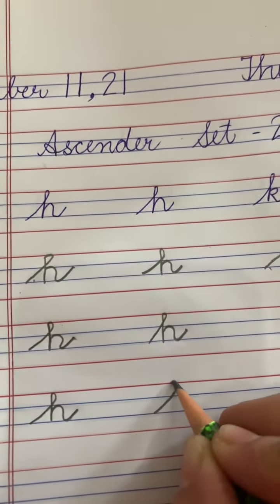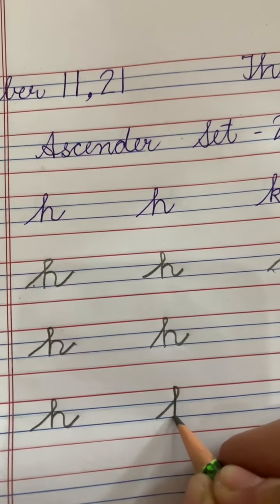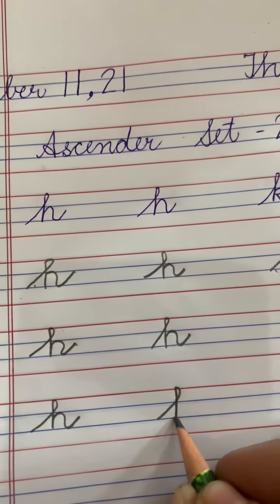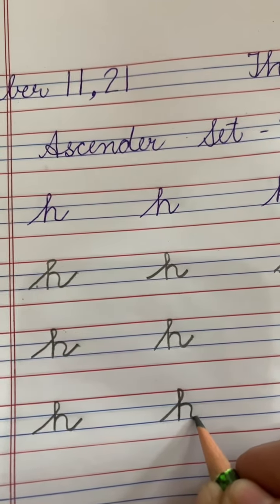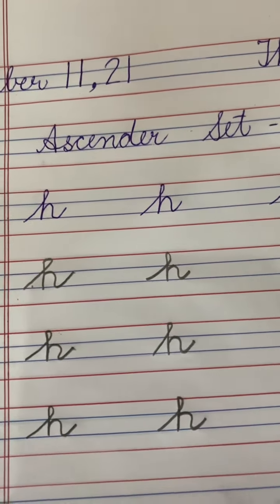Slanting line, turn, standing line, go upside again, then make H and make a small tail like this. Practice H.